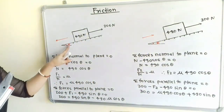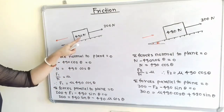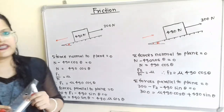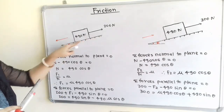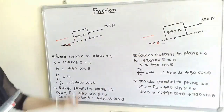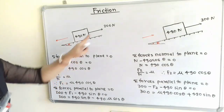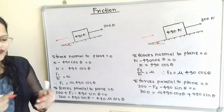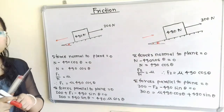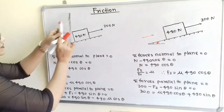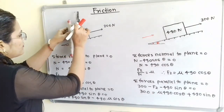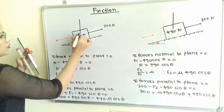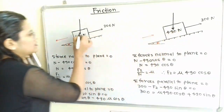We have to find out the angle theta as well as the frictional force between the block and the surface. Now we will draw the free body diagram. The inclined surface and block are the same for both cases; only the applied force differs — 200 N in the first case and 300 N in the second. Weight always acts in the vertically downward direction passing through the center of the block, and it is 490 N.